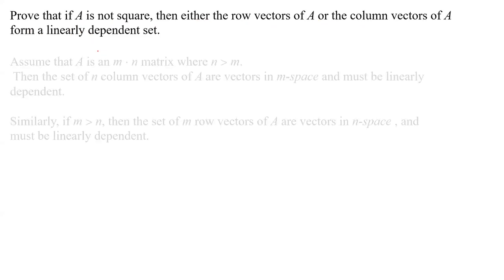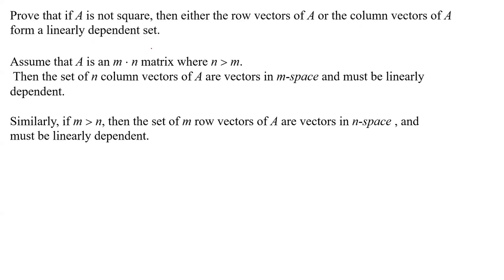Suppose A is not square. If A is an M by N matrix where the number of columns is more than the number of rows, then the set of N column vectors are vectors in R^M.